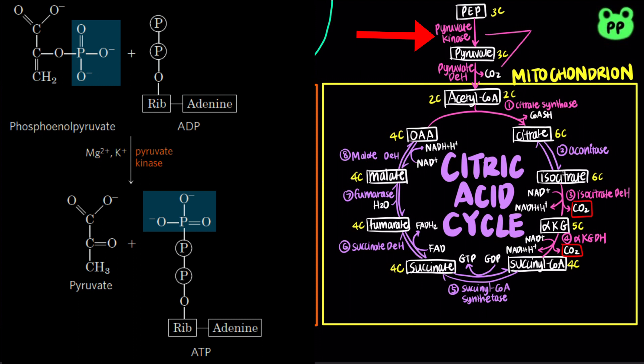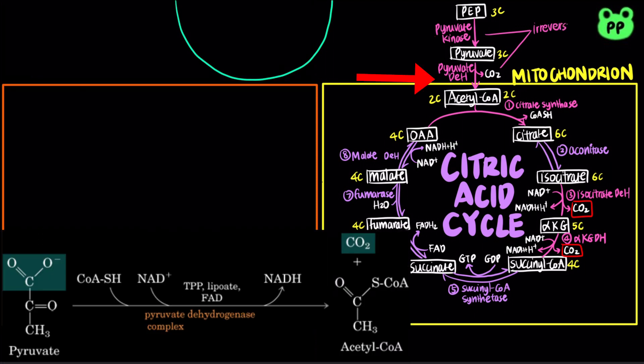The last step of glycolysis, which is the conversion of phosphoenolpyruvate to pyruvate by pyruvate kinase, and the conversion of pyruvate to acetyl-CoA by pyruvate dehydrogenase, are essentially irreversible.